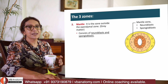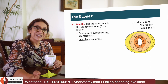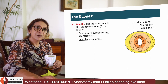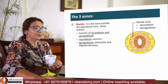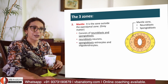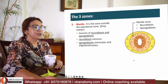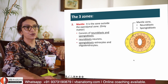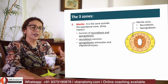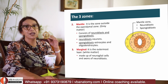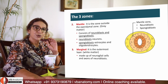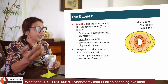Those neuroblasts now produce neurons — that is how your neurons are formed. Those spongioblasts support the neurons, forming astrocytes and oligodendrocytes. So the mantle zone consists of neuroblasts (becoming neurons) and spongioblasts (becoming astrocytes and oligodendrocytes).